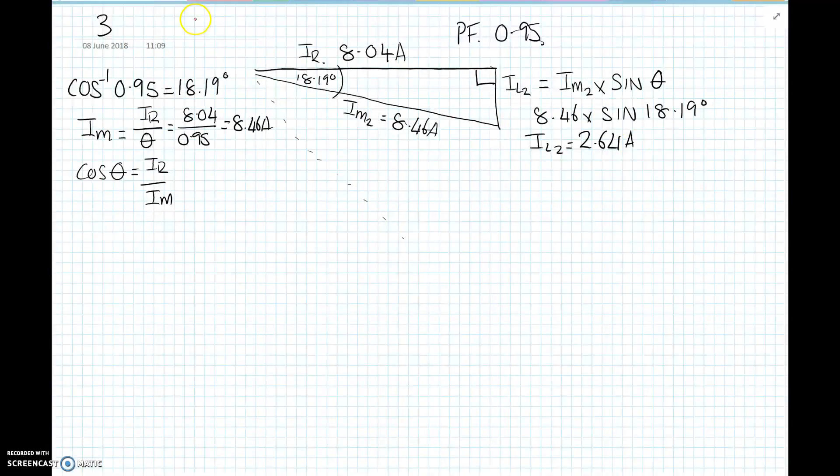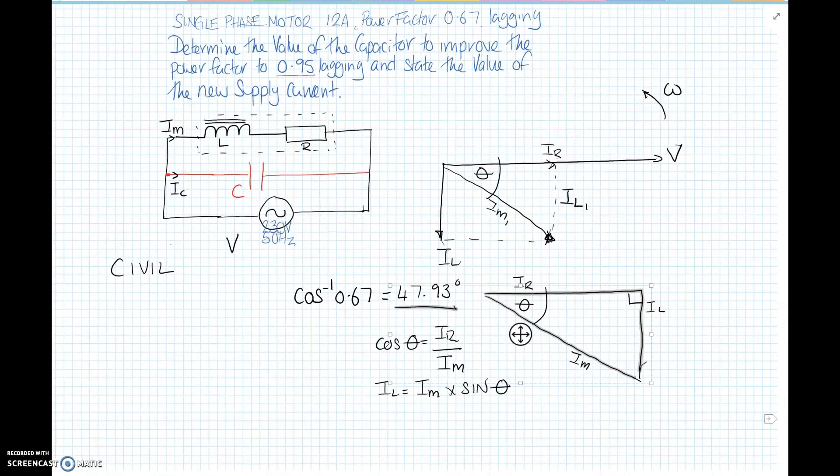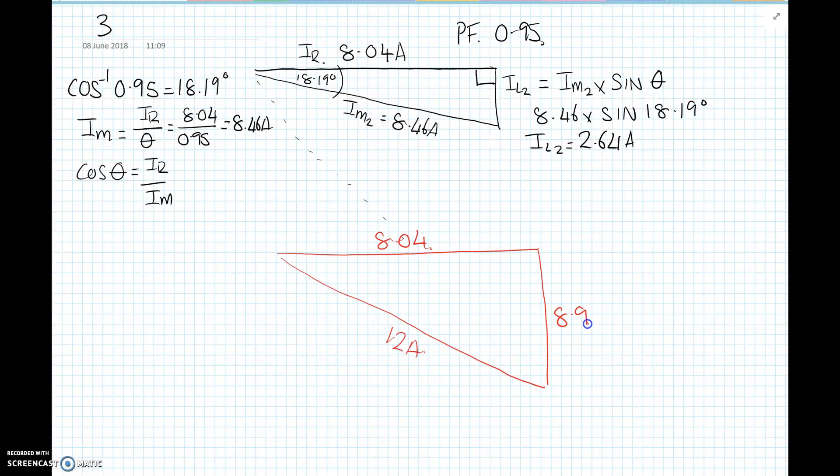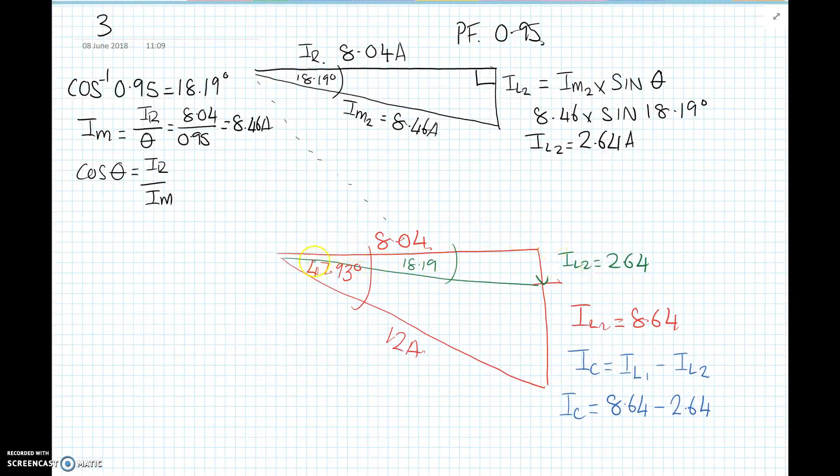This side, I'm going to call this IL2. Now we need to know the reactive current because we need to know how much we need to take off to improve it. So that's going to be IM2, the total motor current, times the sine of the angle. So that's going to be 8.46 times the sine of 18.19 degrees, and that equals IL2 is going to equal 2.64 amps, which is much lower. So what we need to do now is compare our before and after. Previously we had 8.91 when the power factor was 0.67. Now with the new power factor improved to 0.95, that IL2 is only 2.64.